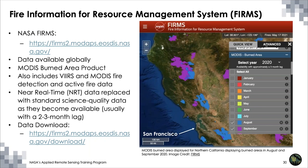NASA's Fire Information for Resource Management System, or FIRMS, has data available globally and is focused on active fire mapping. It has the full gamut — pre-, during-, and post-fire data sets. I wanted to highlight their burned area product from MODIS, where you can select by year and identify burned area by month. Shown here is Northern California in 2020, where we had a large outbreak of multiple fires — most occurring in August and September. You can also download data directly from the FIRMS website.